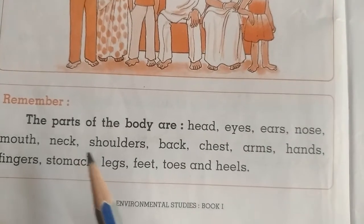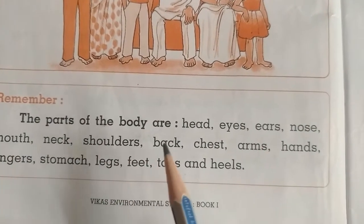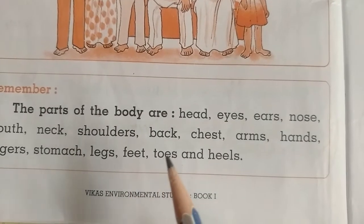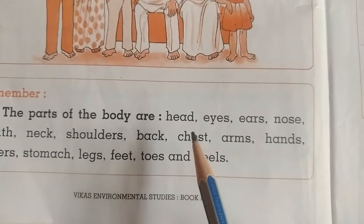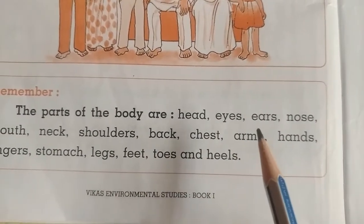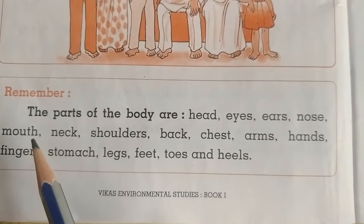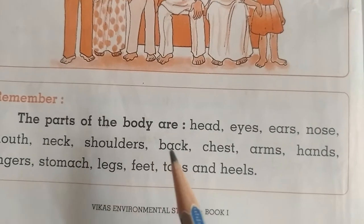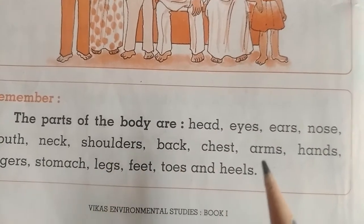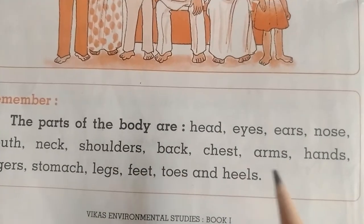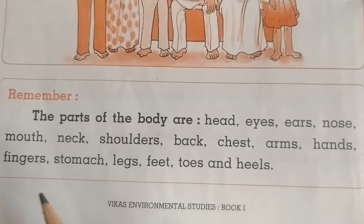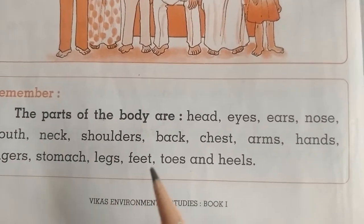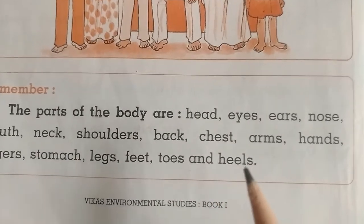The parts of the body are: head, eyes, ears, nose, mouth, neck, shoulders, back, chest, arms, hands, fingers, stomach, leg, feet, toes and heels.